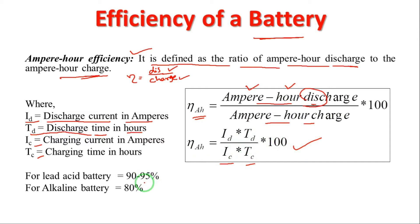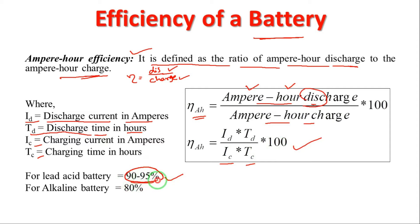For lead-acid batteries, the ampere-hour efficiency is 90 to 95 percent. For alkaline batteries, the ampere-hour efficiency is about 80 percent.